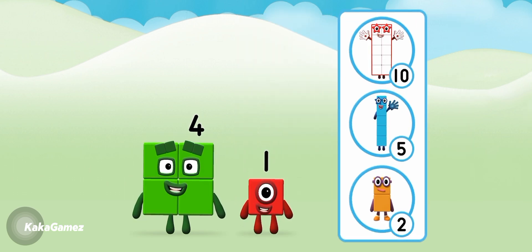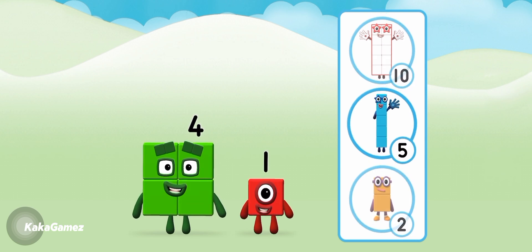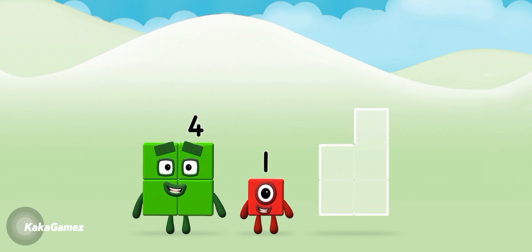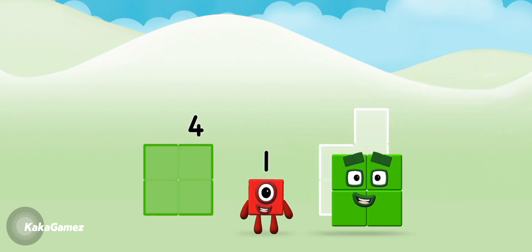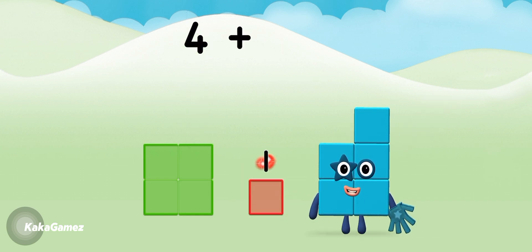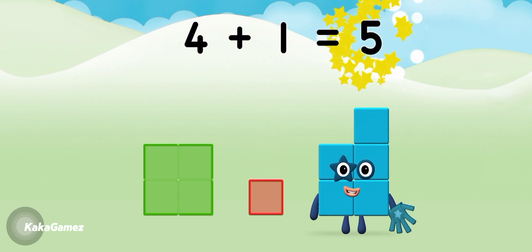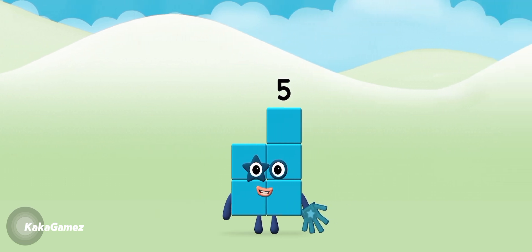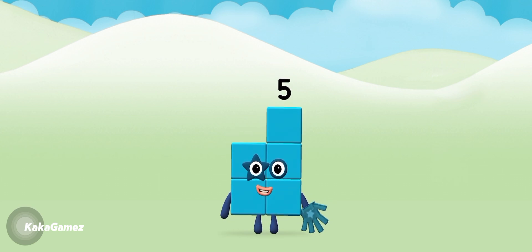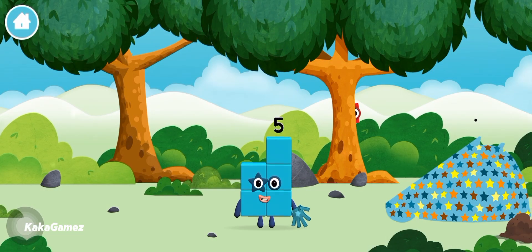What number block can you make by adding these two together? Great! Now add the number blocks together! Four. One. Four plus one equals five. That's it! You made a new number block!